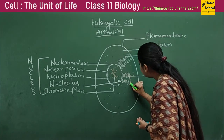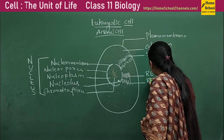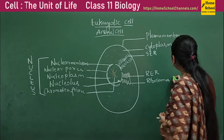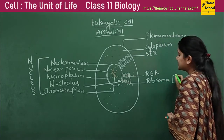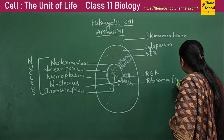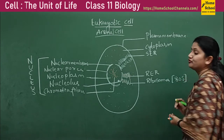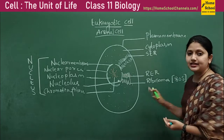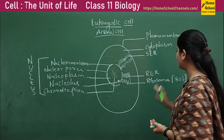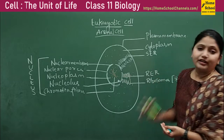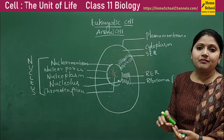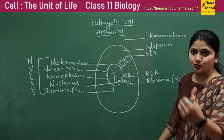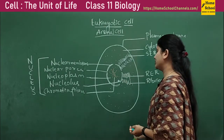The spots on the rough endoplasmic reticulum are called ribosomes. The type of ribosomes present in the eukaryotic cell are the 80S type, with a split of 60S plus 40S. We will study the details of ribosomes in the next classes. So the first membrane-bound organelle is the endoplasmic reticulum — smooth endoplasmic reticulum and rough endoplasmic reticulum.